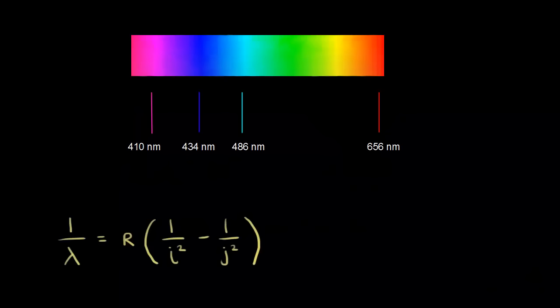Most of you know the famous story of Isaac Newton, where he took a narrow beam of light and put it through a prism. The prism separated the white light into all the different colors of the rainbow. You might see something like this rectangle up here — all of these different colors. I'm going to call this a continuous spectrum, because you see all of these colors right next to each other; they kind of blend together.